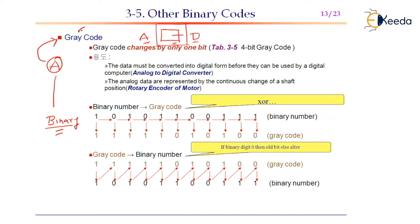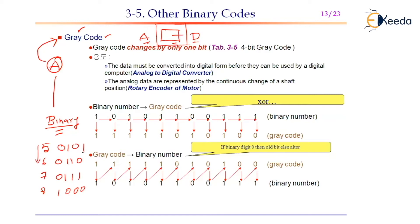Then what is gray code? To understand gray code, let us understand binary code and what the difference is between binary code and gray code. When you take a binary code, let us look at the values 5, 6, 7, 8 and their binary equivalents. 5's binary equivalent is 0101. 6's binary equivalent is 0110. 7's binary equivalent is 0111. 8's binary equivalent is 1000. Now, if a value has to be transformed to the next subsequent value in binary, more than 1 bit will get changed.